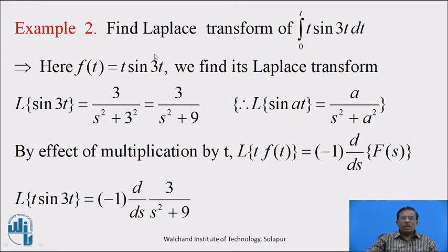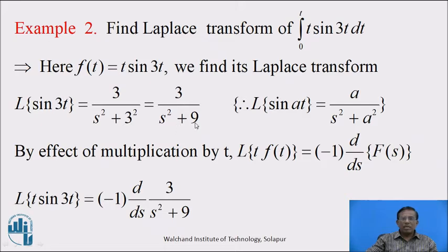Example 2: find the Laplace transform of integration with limit 0 to t of t sin 3t dt. Here f of t equals t sin 3t. We find its Laplace transform using the effect of multiplication by t property. First, Laplace transform of sin 3t equals 3 upon s square plus 3 square, that is 3 upon s square plus 9, using the formula Laplace of sin at equal to a upon s square plus a square. By the multiplication by t property, Laplace of t into f of t equals minus 1 into d by ds of F of s. So Laplace transform of t into sin 3t equals minus 1 into d by ds of 3 upon s square plus 9.